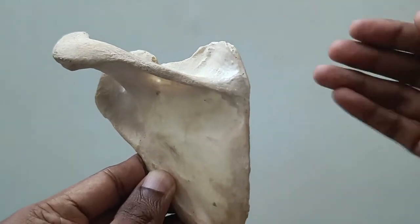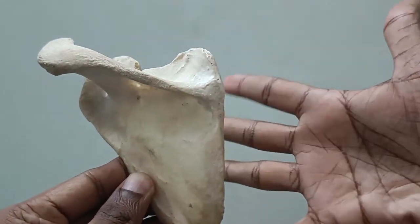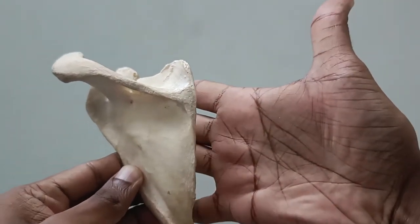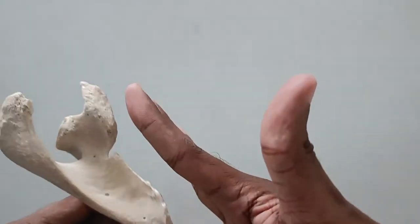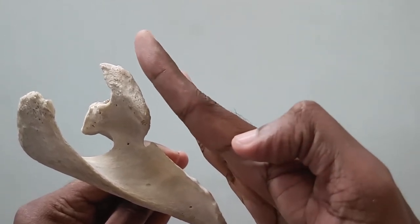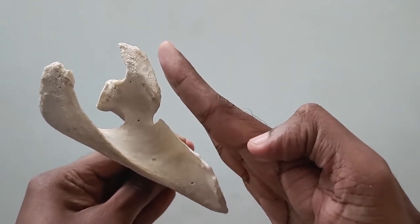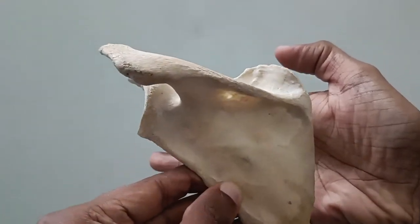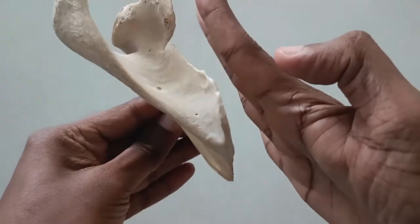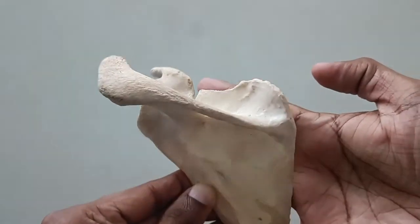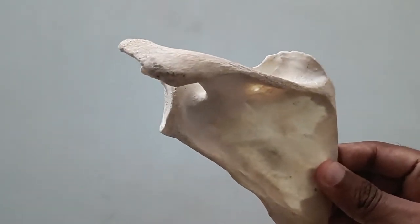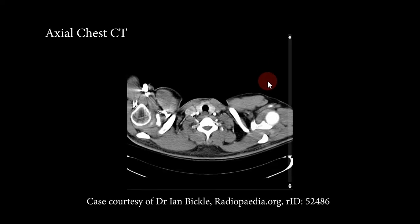This left scapula is located on the left side, almost on the posterolateral aspect of the rib cage. For example, this is representing the rib cage — my fingers are the ribs and my thumb is almost the median plane. It is located tangentially to the curvature of the ribs, so the glenoid process is not projecting laterally but anterolaterally.